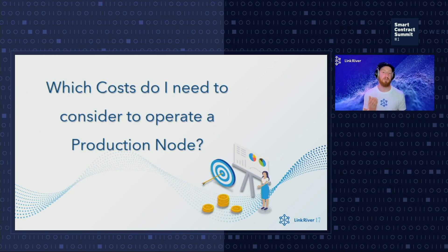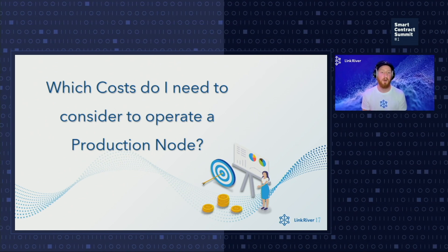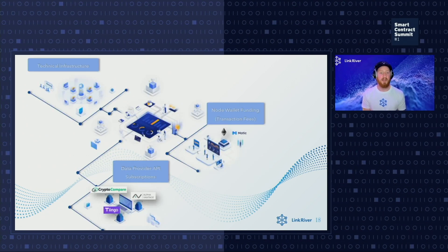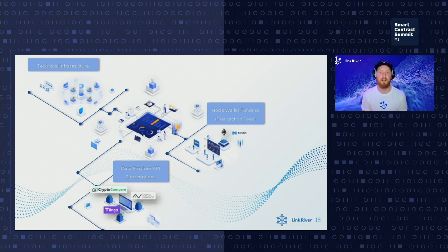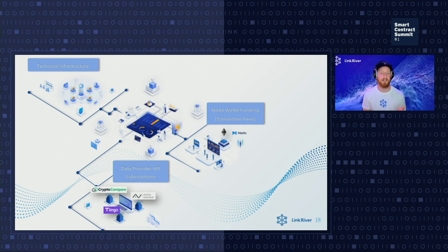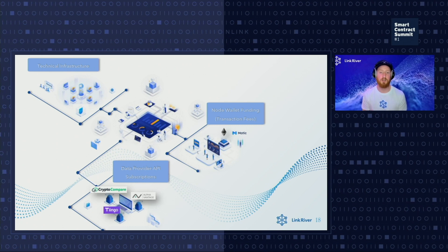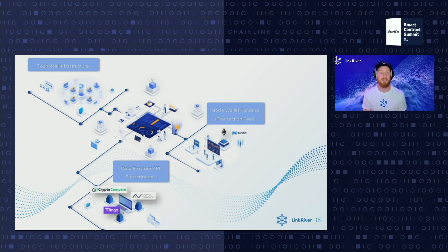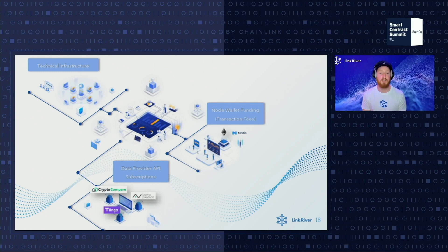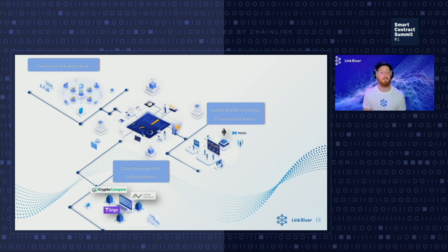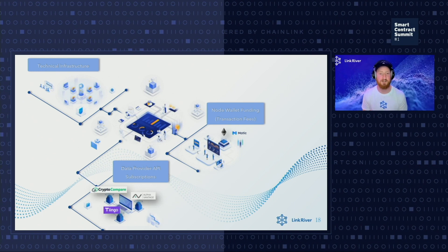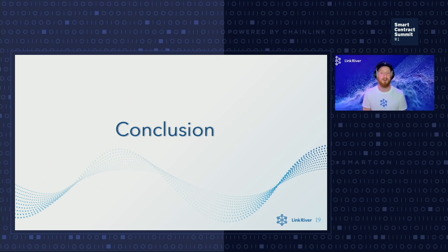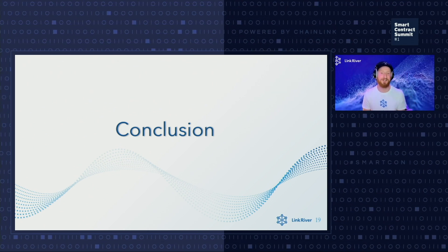Coming to the last question: which costs do I need to consider to operate a production node? First, you need to cover the expenses for your technical infrastructure. In addition, you also need to consider various API subscriptions from premium data providers. And in order to transmit data on-chain, you need to ensure that your node wallet is sufficiently funded at all times to cover transaction fees. These were some of the most frequently asked questions of the community.